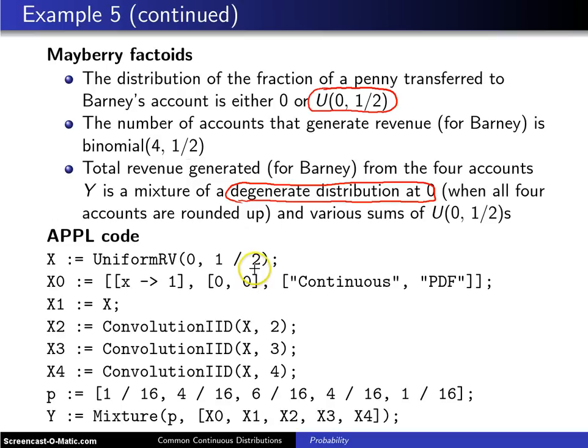The same for three depositors generating revenue and four depositors generating revenue for Barney. You add up these uniform zero-one-halves.